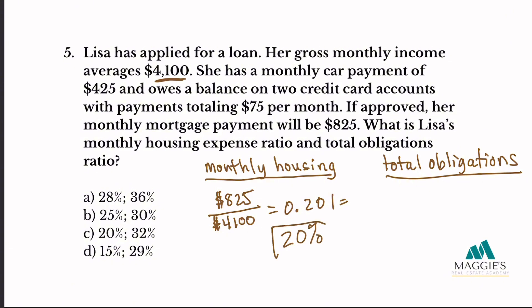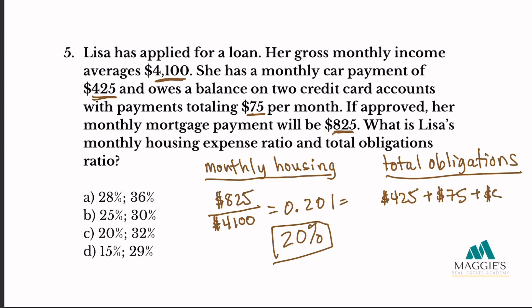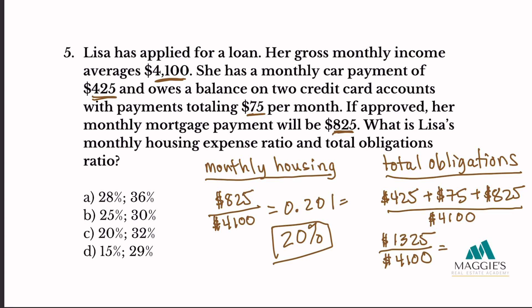For Lisa's total obligations ratio, we add all monthly payments: car payment $425, credit cards $75, and housing $825, totaling $1,325. Divide by gross monthly income of $4,100: $1,325 ÷ $4,100 = 0.323, which equals 32%. So my answer is C.